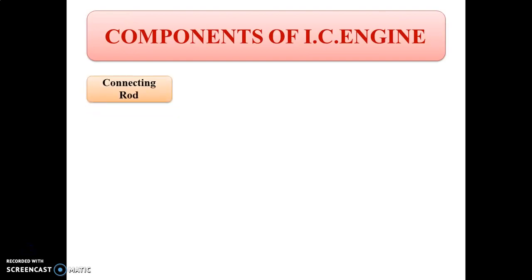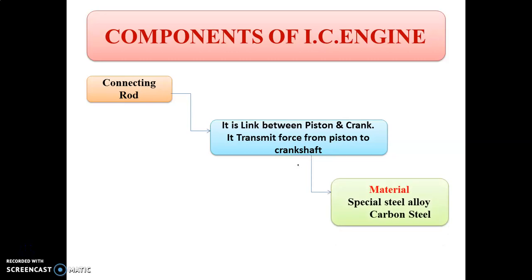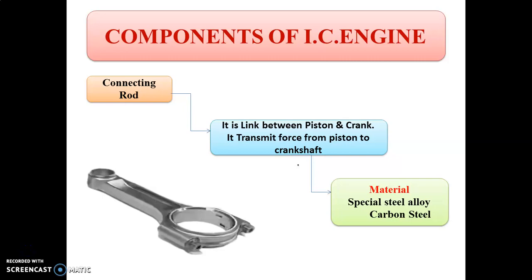The next component is the connecting rod. The connecting rod is the link between the piston and the crank. It transmits the force from the piston to the crankshaft, converting the reciprocating motion of the piston into the rotary motion of the crankshaft. The connecting rod has two ends: the small end, connected to the piston, and the big end, connected to the crankshaft. It is made up from special steel alloy or carbon steel. The figure shows the connecting rod having the small end and bigger end.